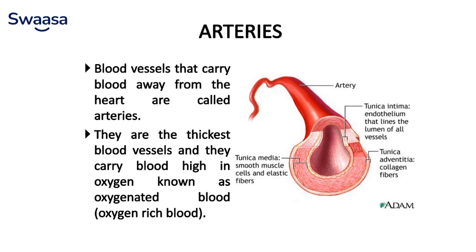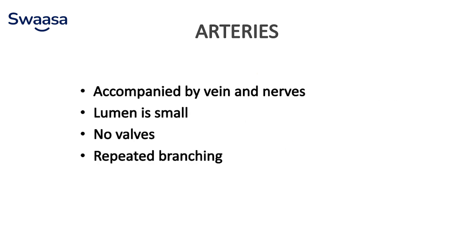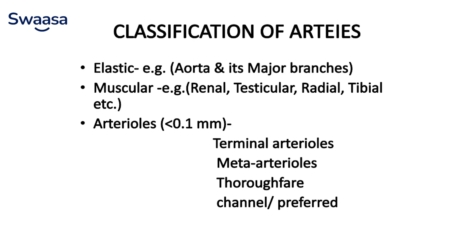Arteries are blood vessels that carry blood away from the heart. They are the thickest blood vessels and carry blood high in oxygen, known as oxygen-rich blood. Arteries are accompanied by veins and nerves, contain a small lumen, have no valves, and undergo repeated branching. Classification of arteries: elastic — for example, the aorta and its major branches; muscular — for example, renal, testicular, radial, tibial. Arteries less than 0.1 mm include terminal arterioles, meta-arterioles, and thoroughfare channels.